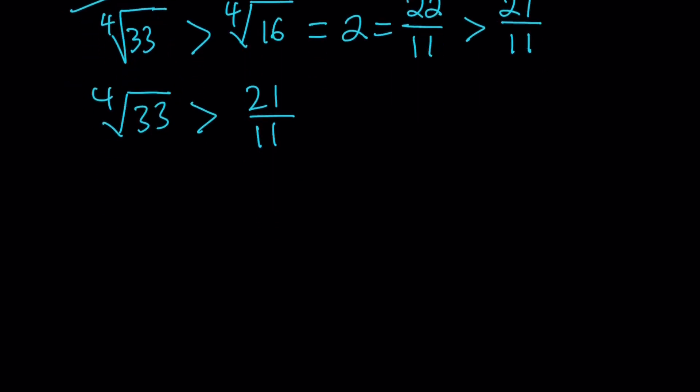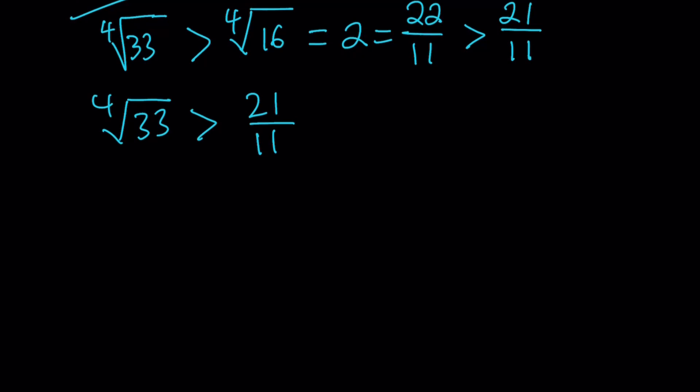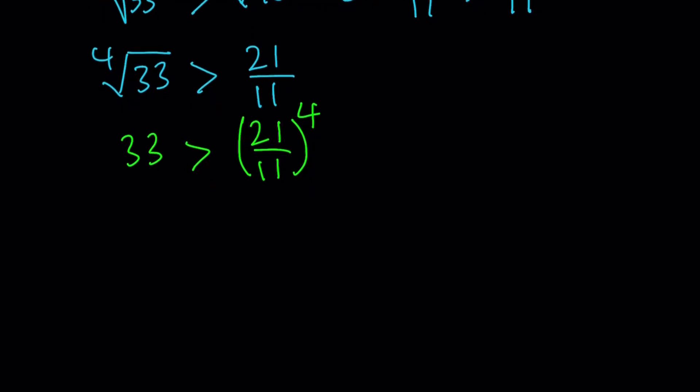Now here's what we're going to do. Raise both sides to the fourth power. And when we do, we're going to get 33 is greater than 21 over 11 to the fourth power. That way we're getting rid of the radicals because the original problem doesn't have any radicals, but it's not good enough. We're going to put things together. So let's expand this. The stuff on the right hand side can be written as 21 to the fourth divided by 11 to the fourth.